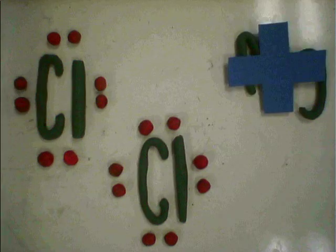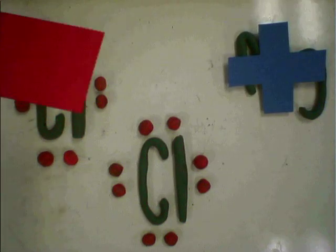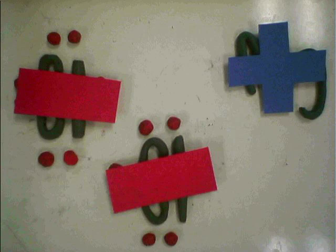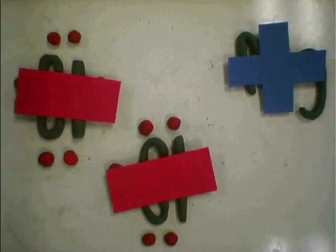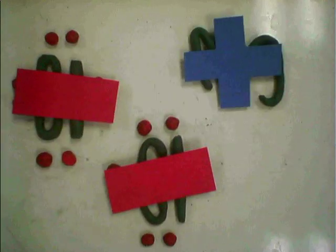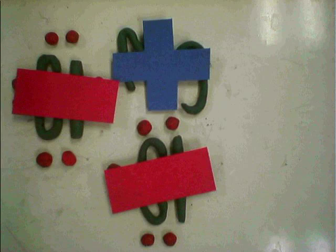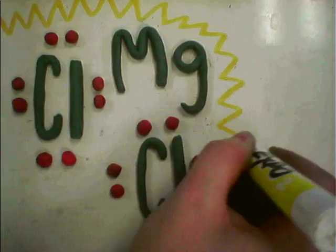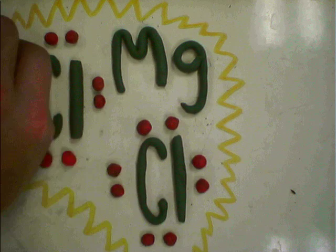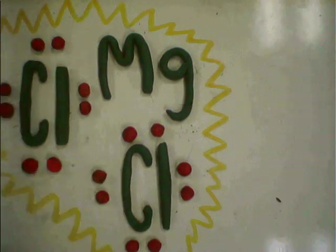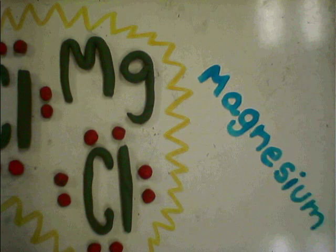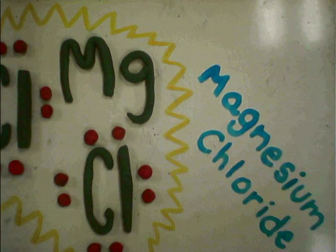Now all three atoms are stable and happy. Magnesium, since it lost negatively charged electrons, is a positive ion. Both of the chlorine atoms, since they gained electrons, are now negative ions. Since opposites attract, magnesium bonds with the two chlorines in a process called ionic bonding. The result is an ionic compound called magnesium chloride.